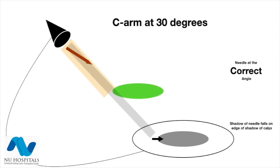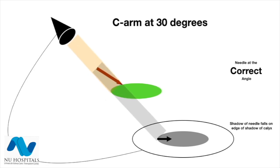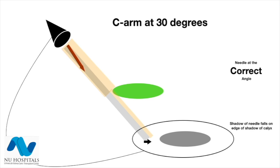If you are trying an end-on puncture and you can see the stem of the needle on the fluoroscopy screen, then you are pointing at the wrong target. This may be either superficial or it may be deep.